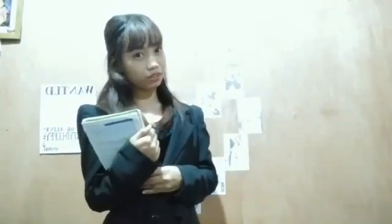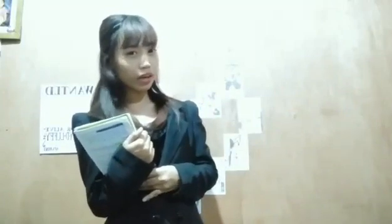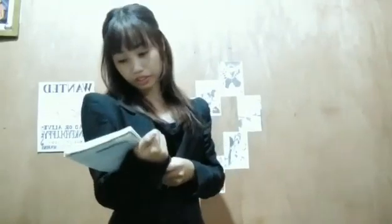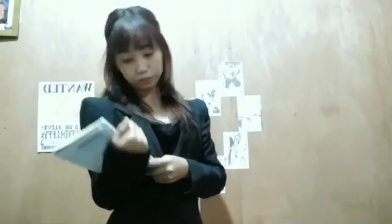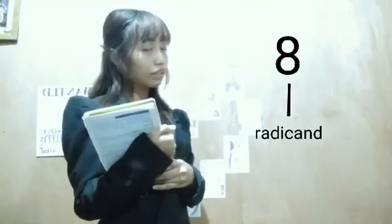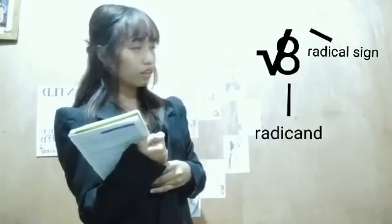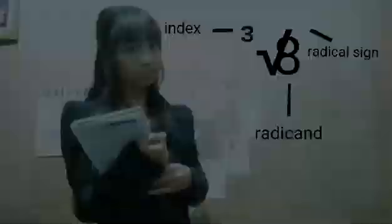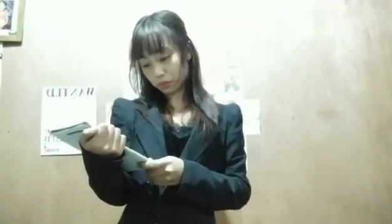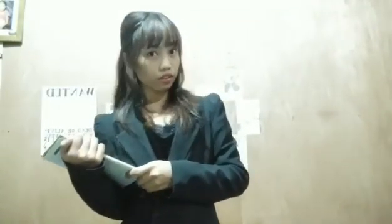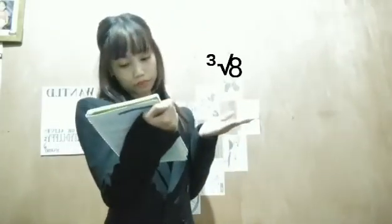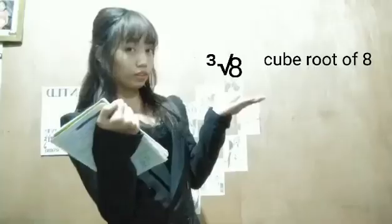Hello everyone, I'm Daniela Olan, and we're talking about radicals. An exponential number whose exponent is a rational number can be expressed as a radical. This is what we call the radicand, and this is what we call the radical sign. This is the index. The denominator of a rational exponent becomes the index of the radical number. So this is read as cube root of 8.